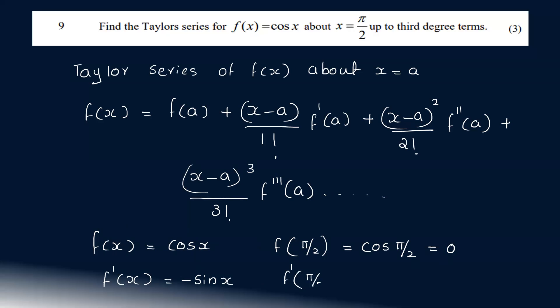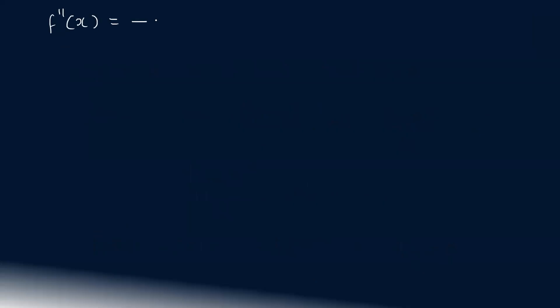So f'(π/2) = −sin(π/2) = −1. Then f''(x): the derivative of −sin(x) is −cos(x), so f''(π/2) = −cos(π/2) = 0.